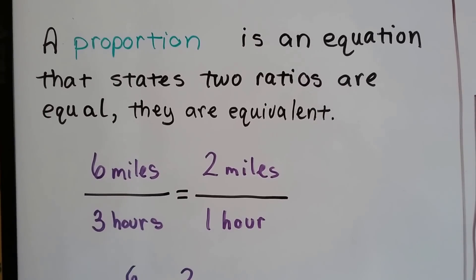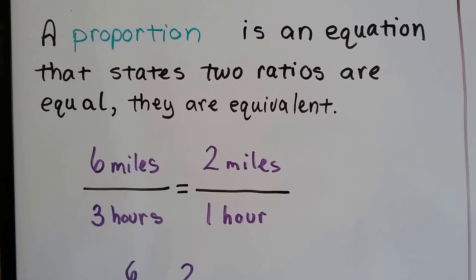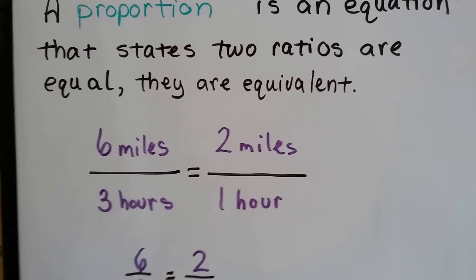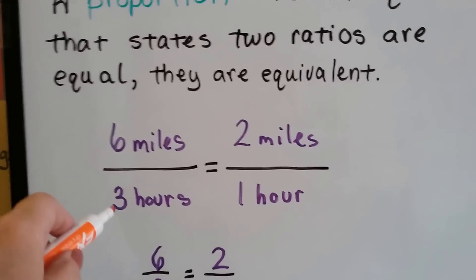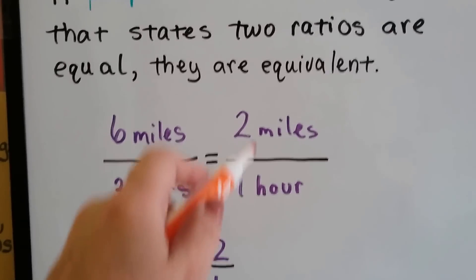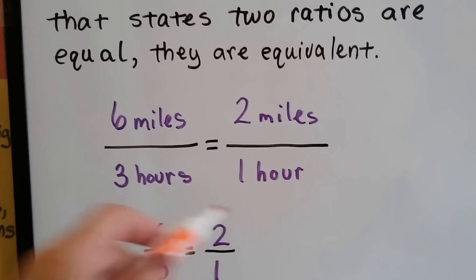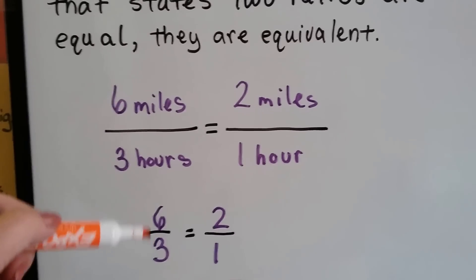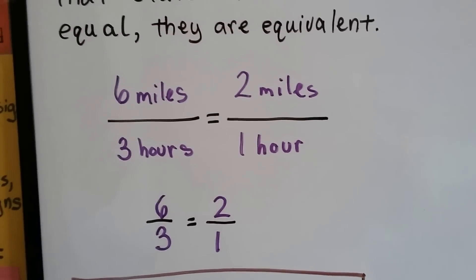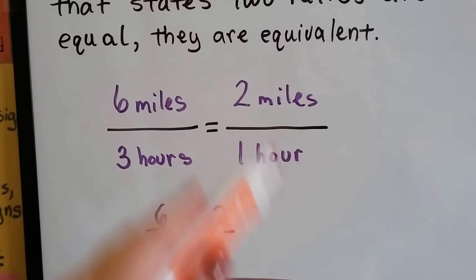It's a fraction, like a ratio. 6 miles over 3 hours equals 2 miles over 1 hour. 6 over 3 equals 2, and 2 over 1 equals 2. So these are in proportion to each other.